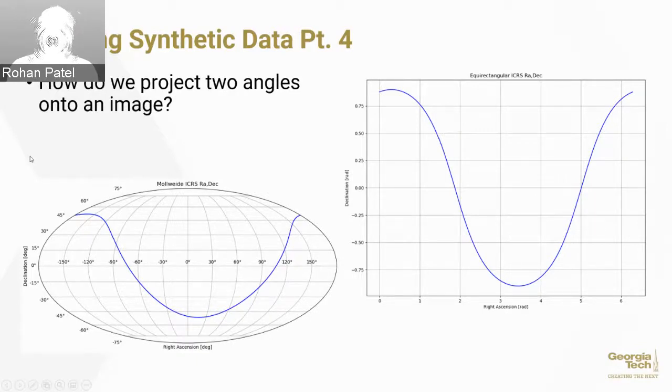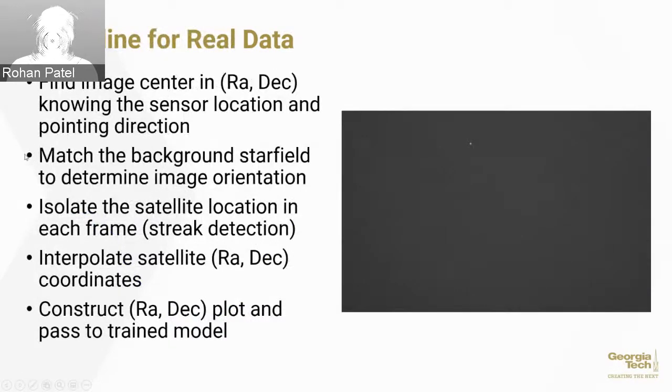We've talked about how you would create synthetic data, but now it's important to talk about how you would evaluate a model using real data. There are quite a few steps to it. First, if I take an image, I should know the center of the image because I know where I took it from and the direction I was pointing. Next, I want to look at the background stars. The star field here, you can see a bunch of different stars, and I should use this to determine the image orientation. Then I want to isolate the satellite location. This is actually a GIF, there's a satellite passing by right here. This is real data we took. If you notice, the satellite is quite hard to spot. So isolating satellite location isn't super easy, but it's doable. Then we want to find the satellite coordinates, construct our plot, and pass it to the model. This isn't only something we do with synthetic data, you can evaluate using real data too.